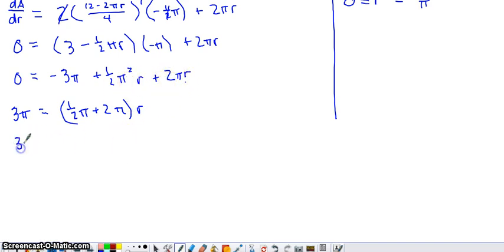And that will give you (1/2 π² + 2π) inside a set of parentheses that's being multiplied by r, that common factor between these two terms. And then divide both sides by this quantity and you have 3π / (1/2 π² + 2π) and that's going to be our value of r that makes the derivative 0. I'm going to do a little bit of work on the calculator here and then we'll catch up in a minute.